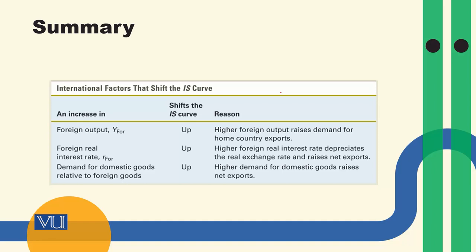Second, our trading partners' — foreign countries' — output: if foreign output increases, this will add to our net exports. Third, our trading partners' real interest rates: if foreign real interest rates rise, this will also shift our IS curve upward.